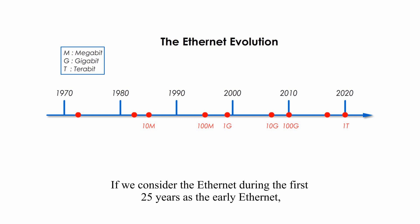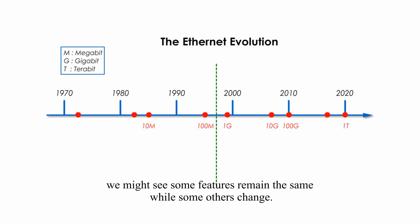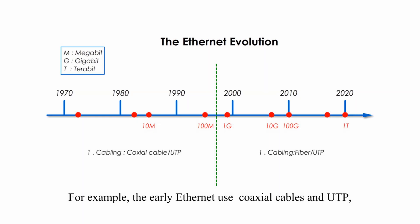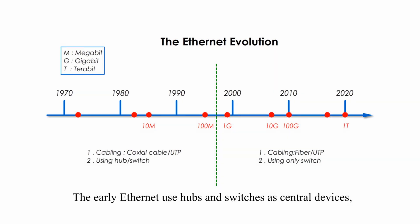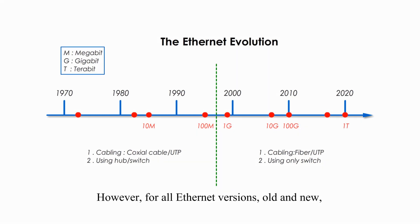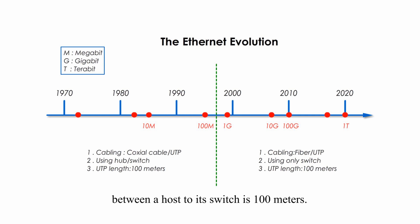If we consider the Ethernet during the first 25 years as the early Ethernet, and the Ethernet during the second half as the modern Ethernet, we might see some features remain the same while others change. For example, the early Ethernet used coaxial cables and UTP, but modern Ethernet uses fibers and UTP. The early Ethernet used hubs and switches as central devices, but modern Ethernet only uses switches. However, for all Ethernet versions, old and new, some features haven't changed. With UTP/STP, the maximum distance between a host and its switch is 100 meters.